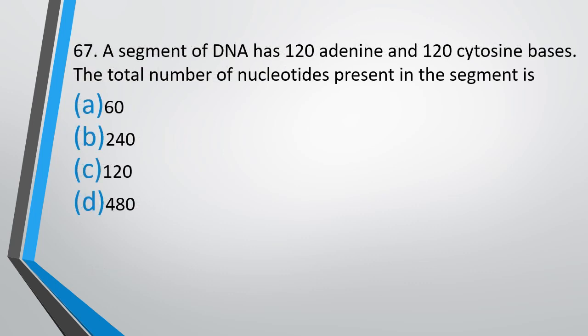Question number 67: A segment of DNA has 120 adenine and 120 cytosine bases. The total number of nucleotides present in the segment is — option A: 60, option B: 240, option C: 120, or option D: 480. The correct answer is option D, that is 480.